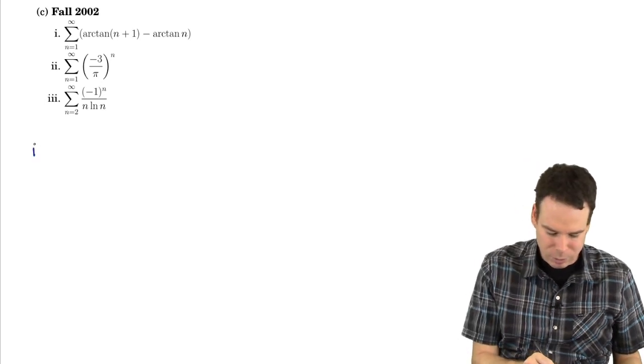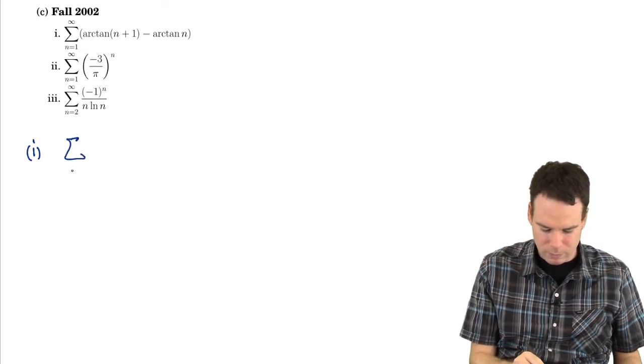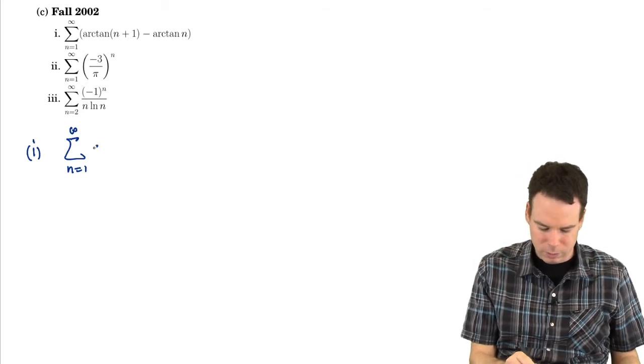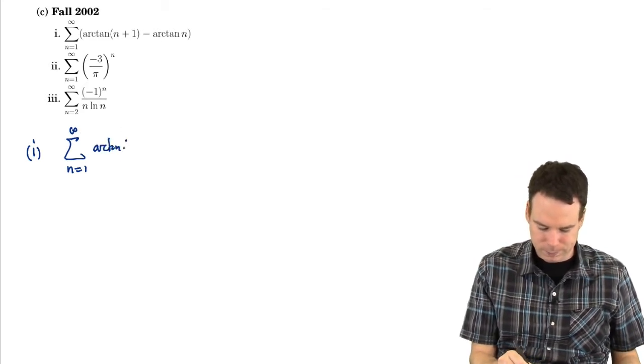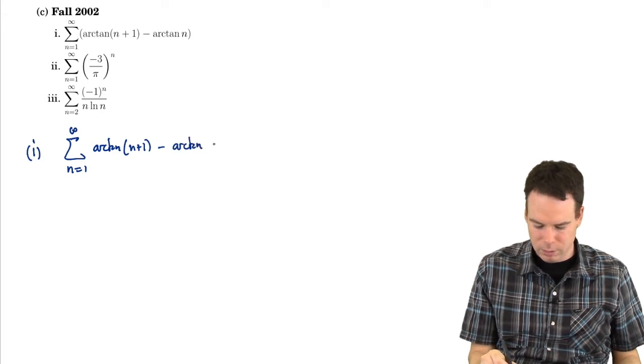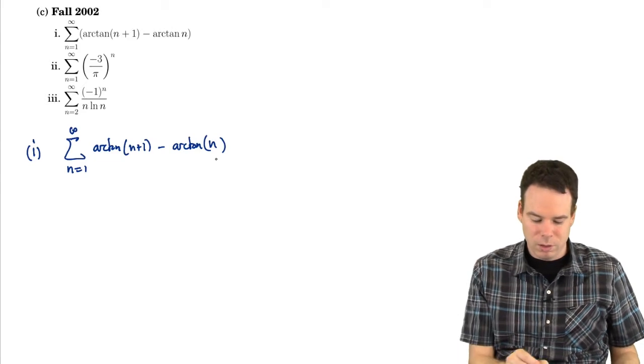So let's have a look at the next three examples. The sum of n goes from 1 to infinity of arc tan of n plus 1 minus arc tan of n. Maybe just a quick check, do the terms go to 0?